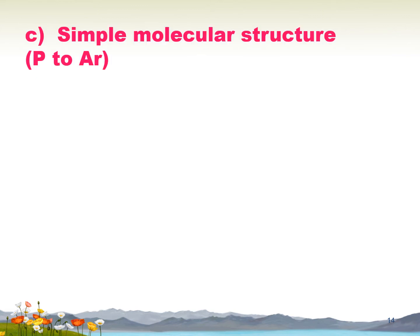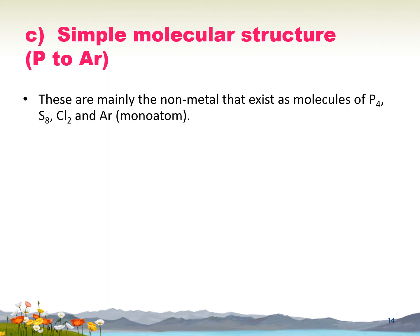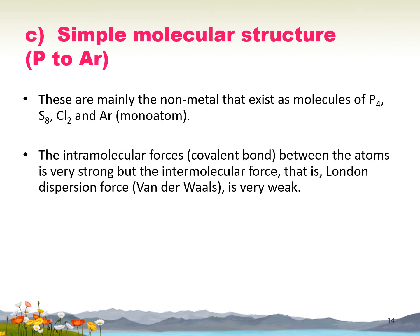Simple molecular structure covers phosphorus to argon. These non-metals exist as molecules of P4, S8, Cl2, and Ar. Argon is the only monoatomic element because it is an inert gas. The intramolecular forces — the covalent bonds between atoms — are very strong, but the intermolecular forces, which are London dispersion forces or Van der Waals forces, are very weak.